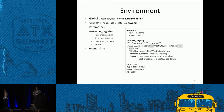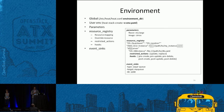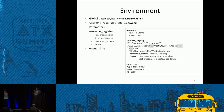Heat also has an event sinks feature. Currently, stack events go to the Heat database and can be queried via stack events. But if you want to listen for events on RabbitMQ or a messaging service, you can use event sinks. Each event sink has a type, a target queue name, and a configurable TTL parameter.